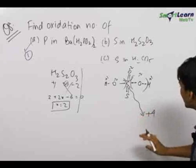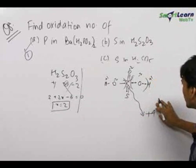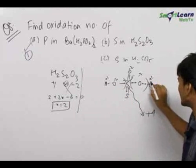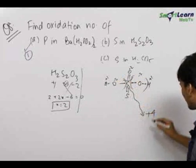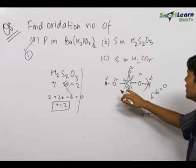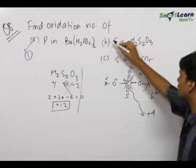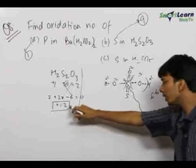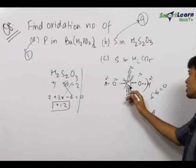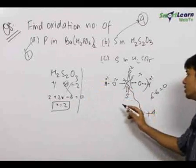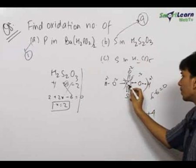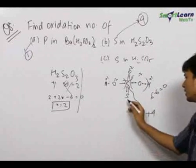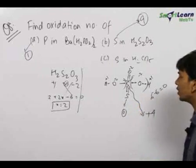Therefore we see that the total sum of all the oxidation numbers still comes out to be equal to 0 — that is 4 plus 5 plus 1 is 6, and minus 6, that is 0. Therefore we get the final answer for the oxidation number of sulfur in H₂S₂O₃ to be equal to 4. The mistake which we were doing was assuming the oxidation number of both the sulfur atoms to be the same, which is not the case. The oxidation number of the central sulfur atom is 4 and the oxidation number of the other sulfur atom is 0.